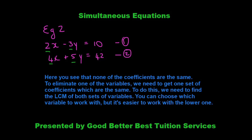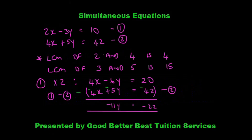You can decide which variable to work with, but I find it easier to work with the lower LCM to avoid big numbers. The LCM of 2 and 4 is 4, and the LCM of 3 and 5 is 15. So I've chosen to work with x. I multiply the first equation by 2, which gives 4x minus 6y equals 20. Then I write the second equation below it: 4x plus 5y equals 42.